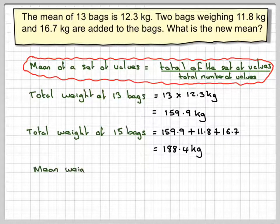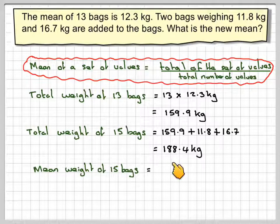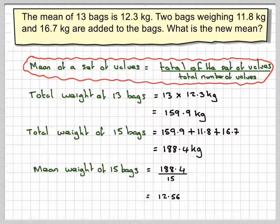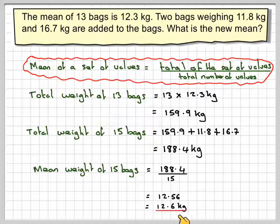The mean weight of the 15 bags will be the total weight, which is 188.4, divided by 15, which gives me 12.56, which is 12.6 kilograms.